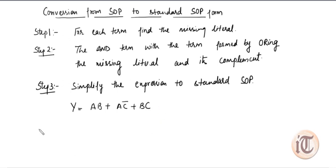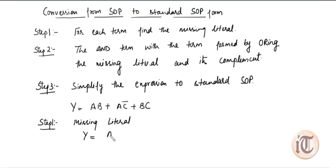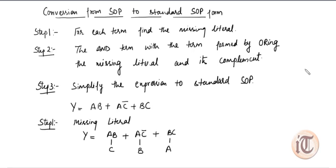Now we have to convert it into standard SOP form following the procedure. Step one: find the missing literal. In AB, C is missing. In AC̄, B is missing. And in BC, A is missing. This is how we find the missing literals.